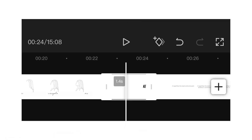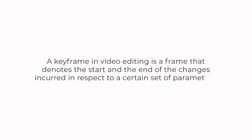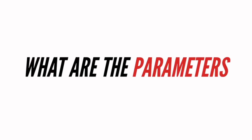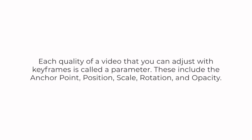Before anything else, what is a keyframe? A keyframe in video editing is a frame that denotes or signifies the start and end of any changes with respect to a certain set of parameters. So what are these parameters? Each quality of a video that you can adjust with keyframes is called a parameter. These include the anchor point, position, scale, rotation, and opacity.